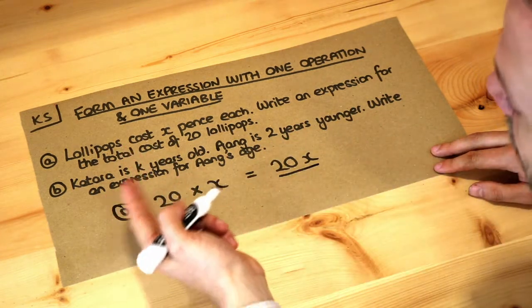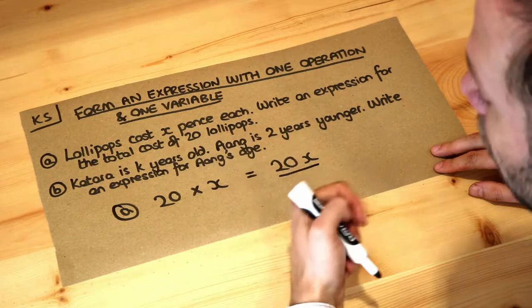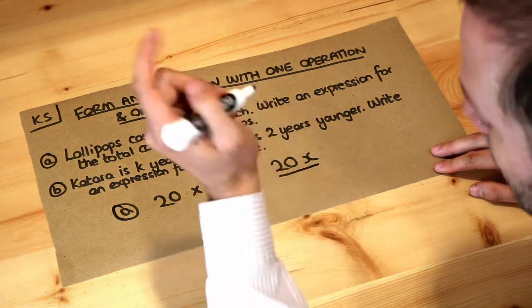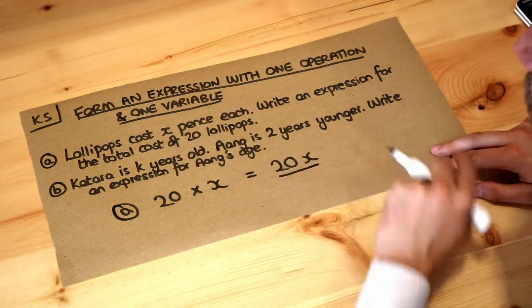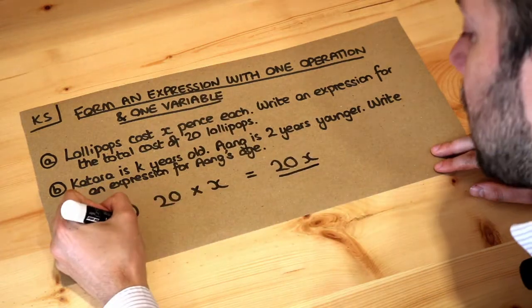At some later point someone could tell you what x was. For example, x might be 3, and then you could substitute it into that expression.